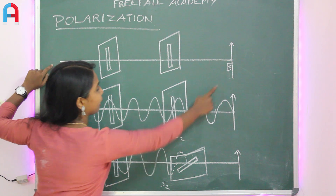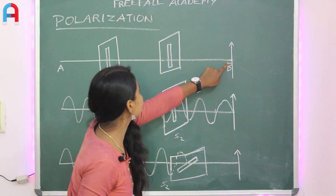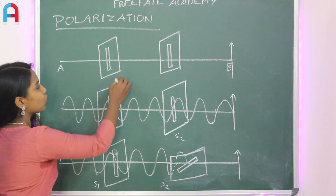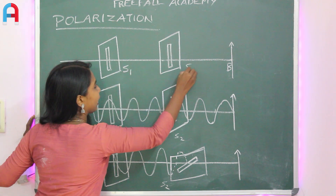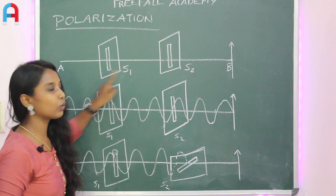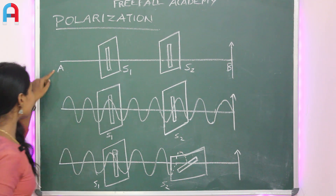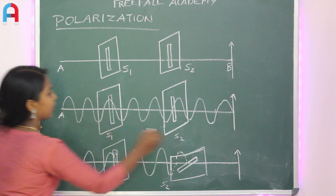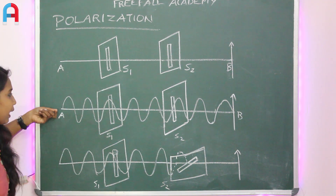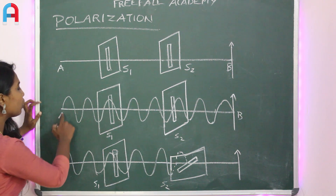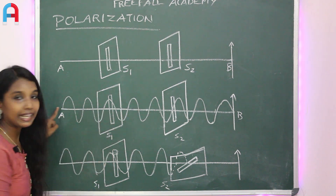Here is AB — it is a string. A is tied at one end and it is passed through two slits, S1 and S2. S1 and S2 are also aligned in the same way. When we reach the end, a transverse wave is set up like this.